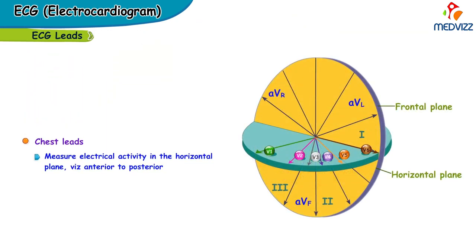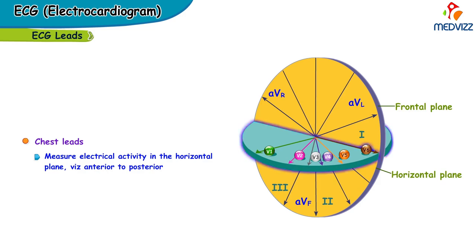Chest leads measure the electrical activity in the horizontal plane, which is anterior to posterior and right to left.